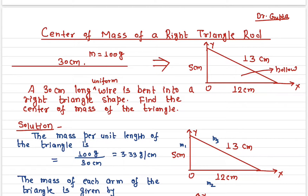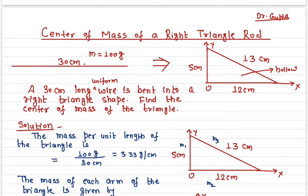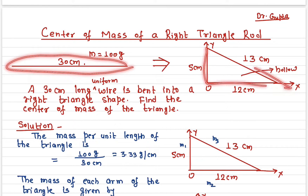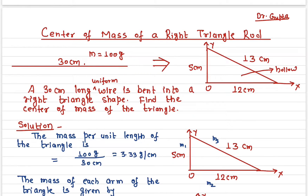In this video I'll talk about how to find the center of mass of a right triangle rod. We have a 30 centimeter long uniform wire — uniform meaning it is homogeneous, so the mass distribution is constant throughout the wire. This wire is bent into a right angle triangle, and we need to find the center of mass of this system.